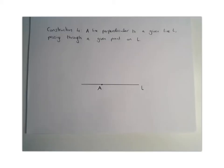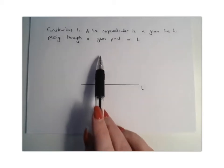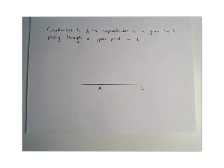In construction 4, we want to find a line perpendicular to a given line L through a point on L. So this is our point A. We basically want to construct a perpendicular line, and this time our point A is on my line.